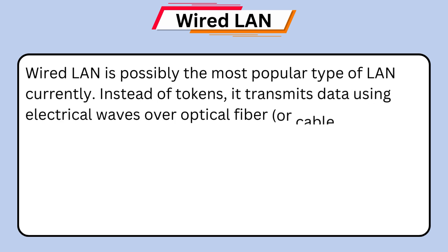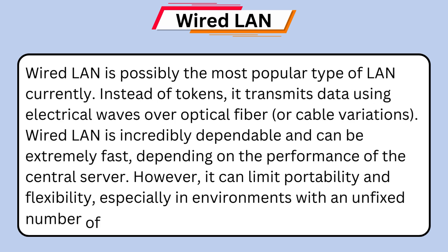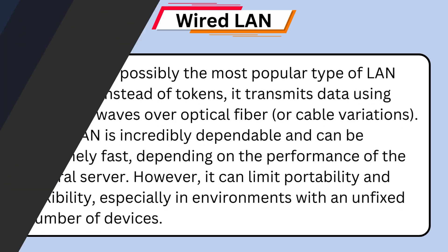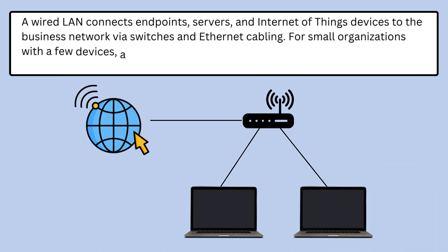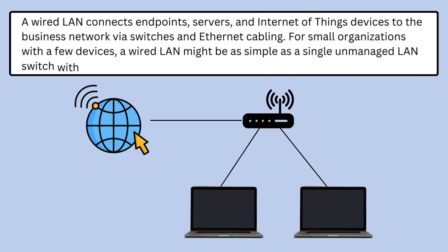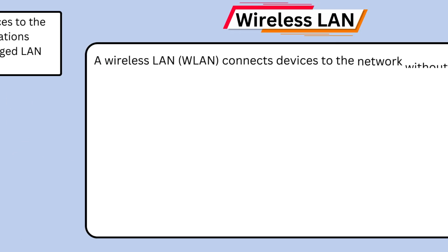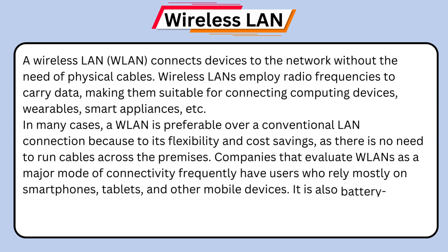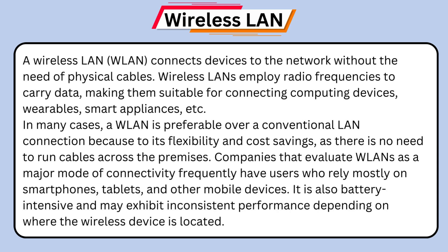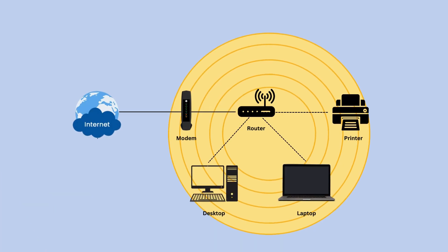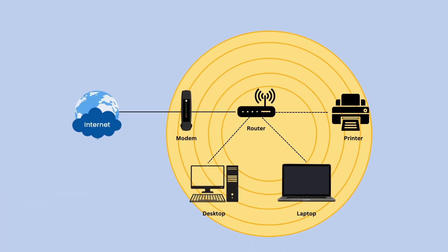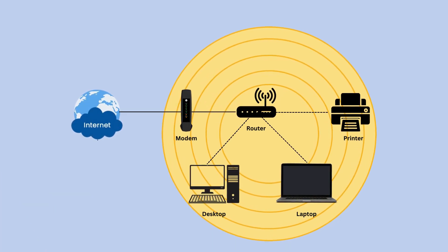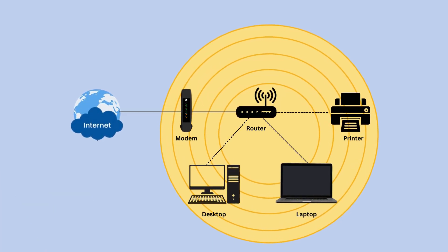A wired LAN connects endpoints, servers, and Internet-of-Things devices to the business network via switches and Ethernet cabling. A wireless LAN connects devices to the network without the need for physical cables. Wireless LANs employ radio frequencies to carry data, making them suitable for connecting computing devices, wearables, smart appliances, and more.